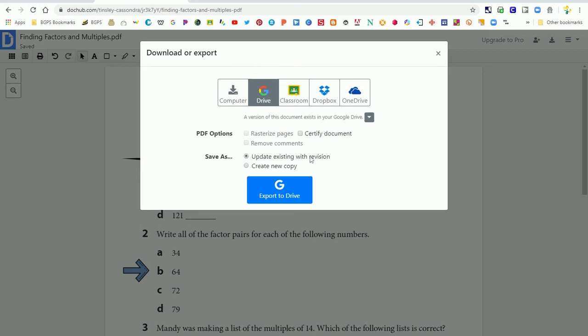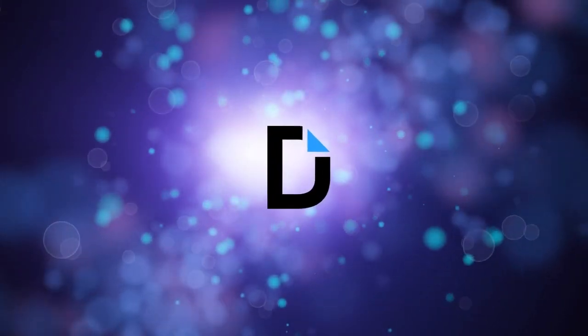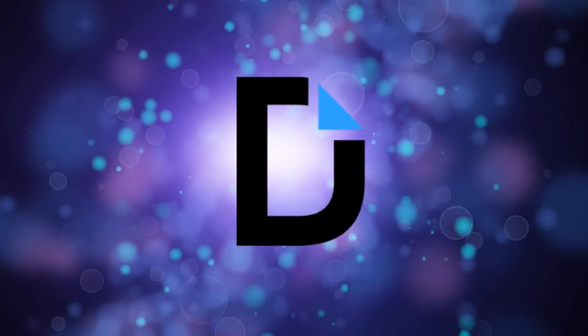So you'll see here when you share to your drive this is where you can remove comments or choose to update an existing revision so you aren't creating multiple copies. So this is how you can use DocHub to edit your PDFs and save those PDFs to your Google Drive and connect it to Google Classroom.